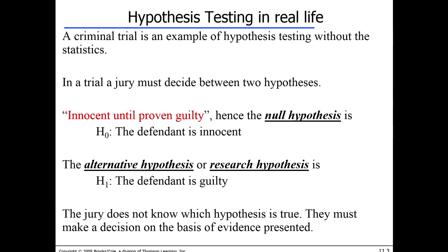Let's start from an example that is not statistical — a criminal trial. When somebody is accused of doing something illegal, the jury present in the courtroom has to decide between two different alternatives. Alternative number one is that the defendant is innocent until proven guilty. This is accepted as the starting assumption. The jury doesn't know the defendant — there's a good chance this is the first time they're seeing the defendant at all — so they start with the assumption called the null hypothesis: that the defendant is innocent until proven guilty.